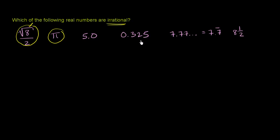0.325. Well, this is the same thing as 325 over 1,000. So I can clearly represent it as a ratio of integers. So this is rational, just as I could represent 5.0 as 5 over 1. Both of these are rational. They are not irrational.